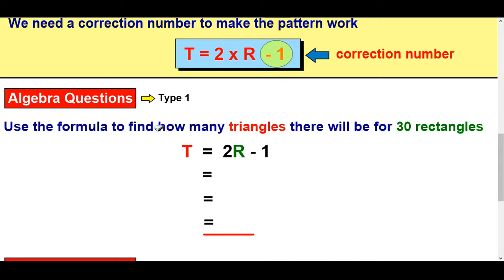Okay, so use the formula to find how many triangles there will be for 30 rectangles. We're told there's 30 rectangles. R. 30 R's. So I've got to double it and take away one. I'm going to write it like this. Two times 30 take away one. Do this bit first. 60 take one. 59.